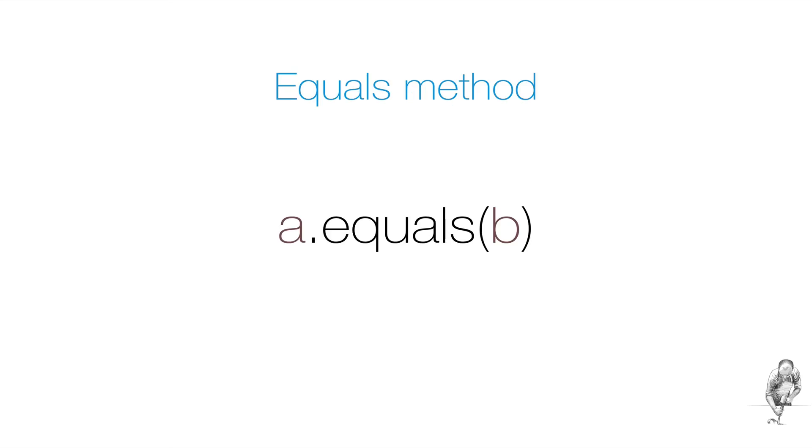To check for object equality, we use the equals method. To get a deeper understanding, let's go back to our coding example.